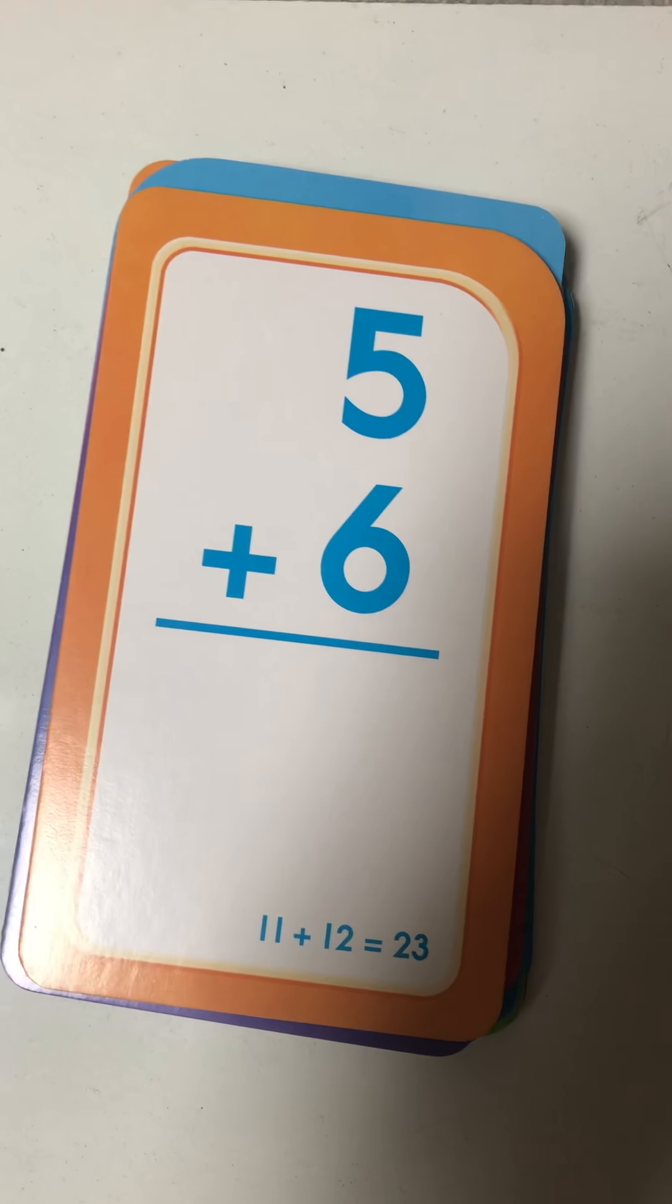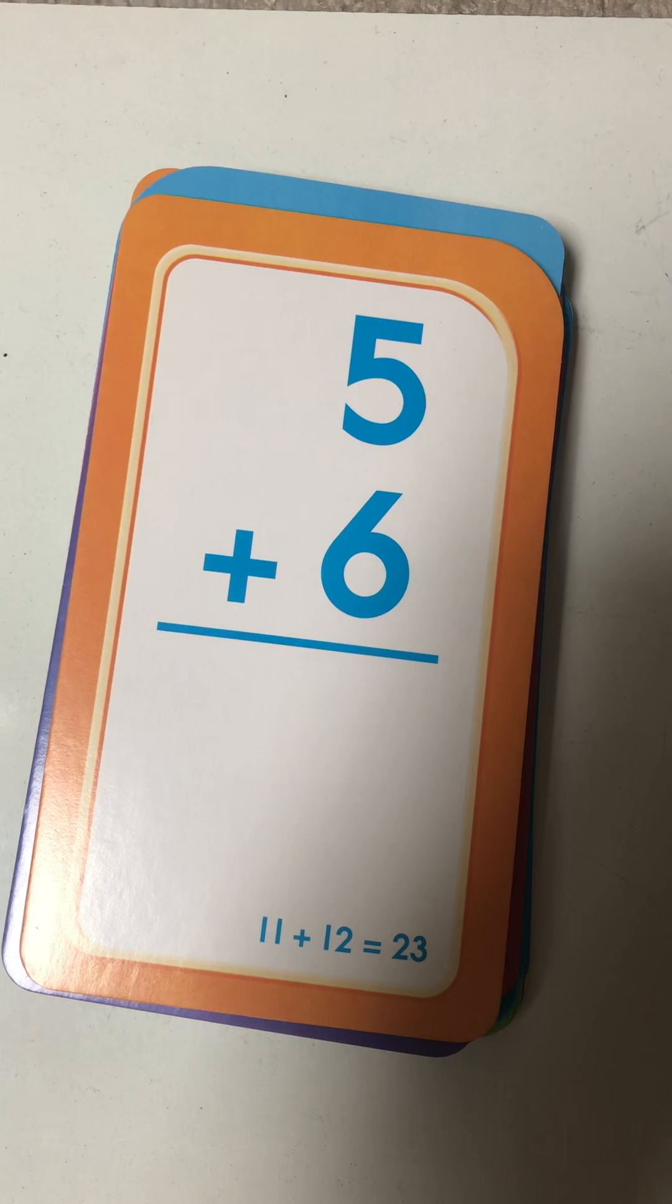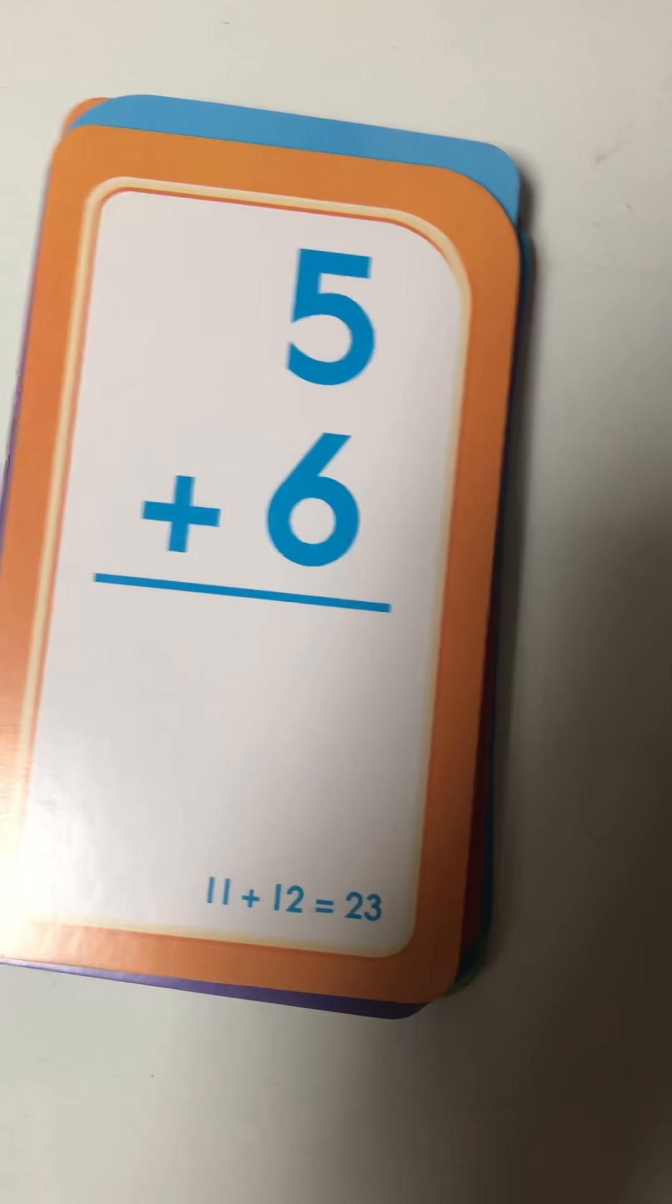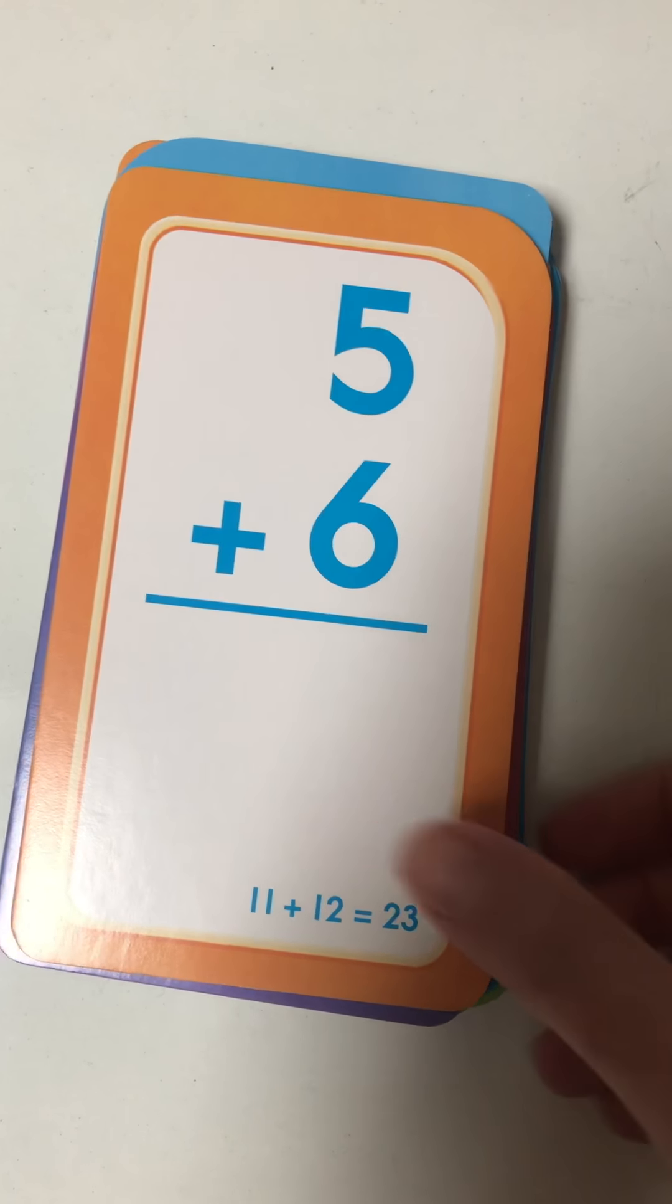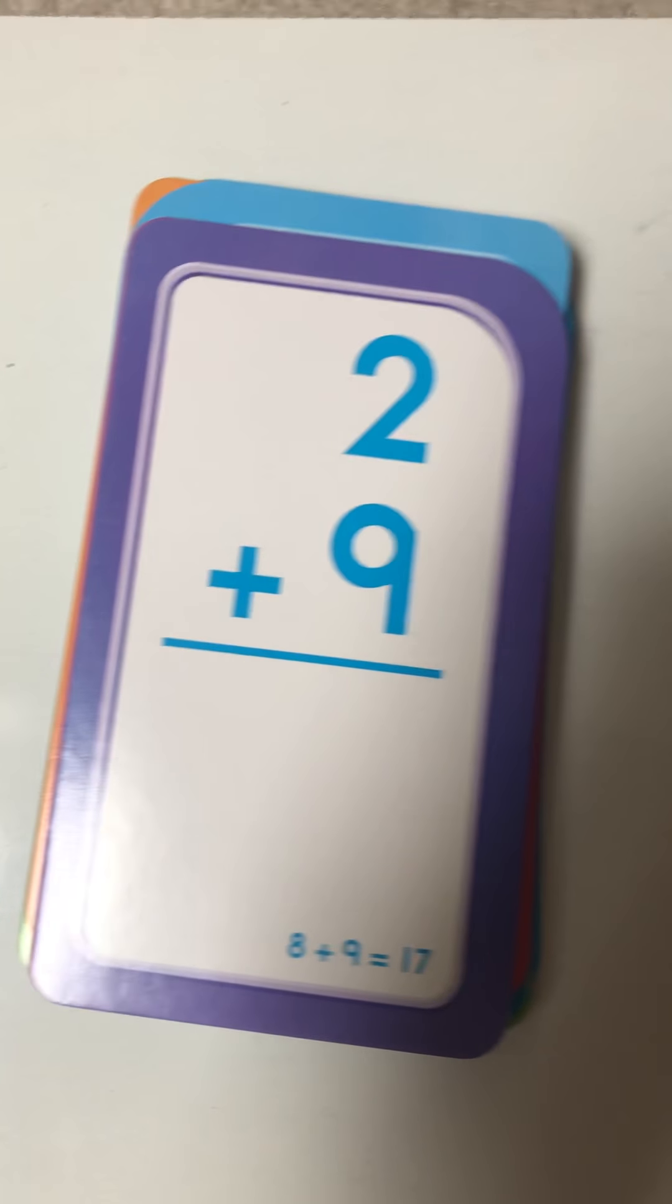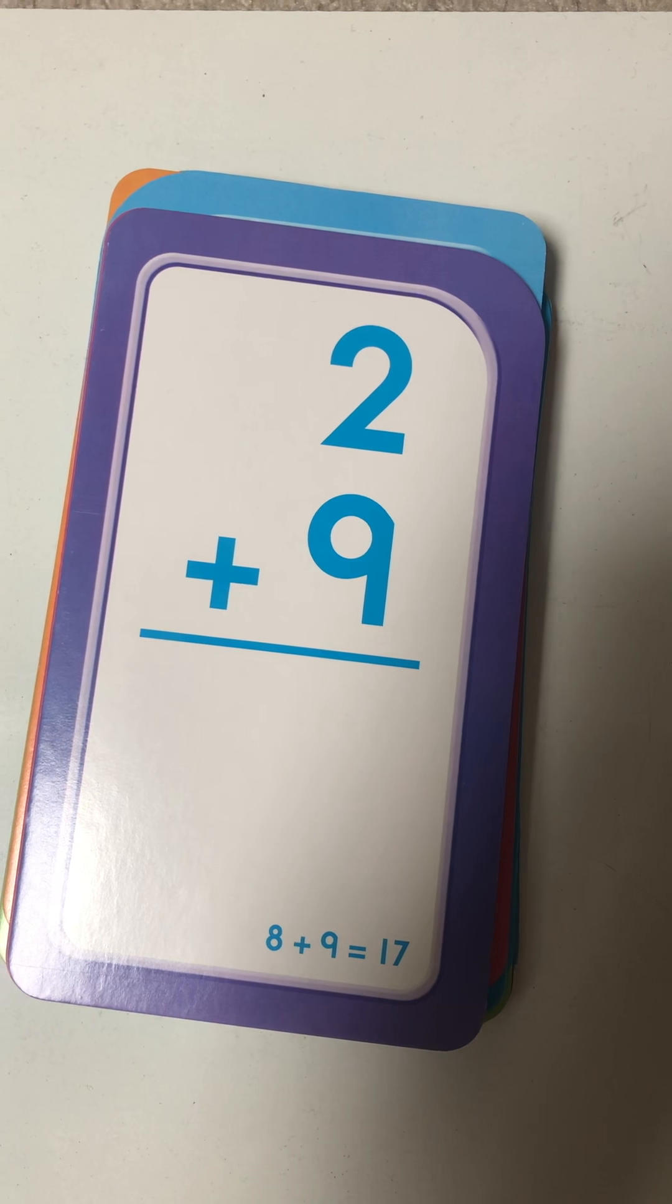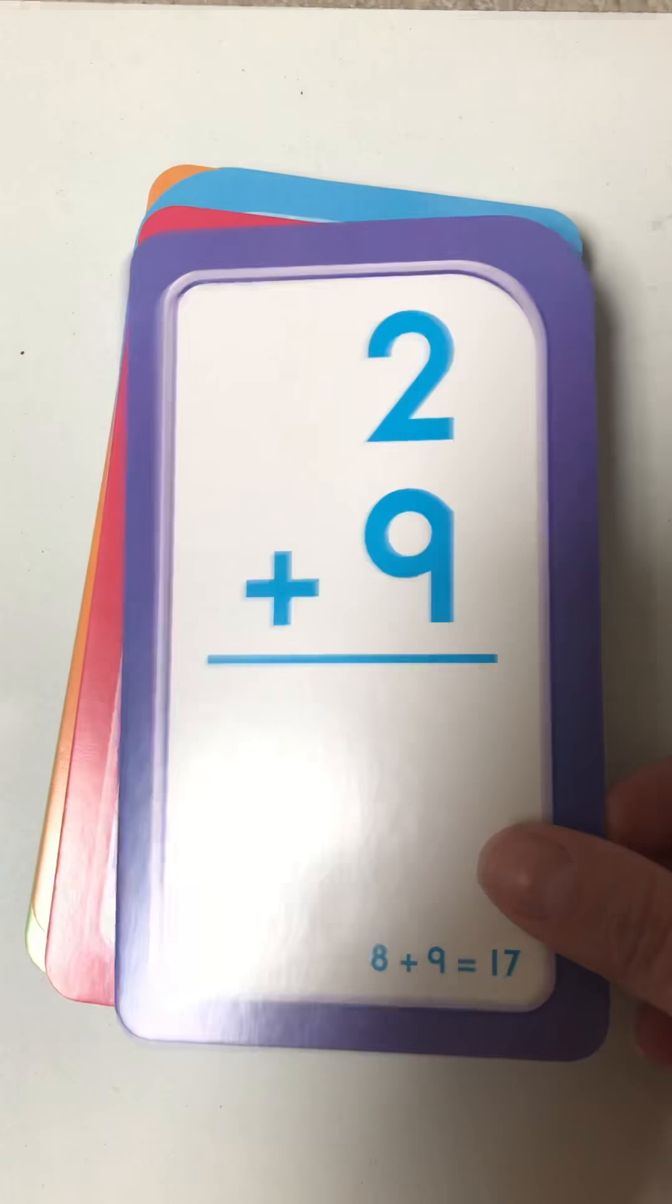Five plus six. The answer is 11. I think about five plus five equals 10 and then just add on one more for that number six. Two plus nine. The answer is 11, three more.